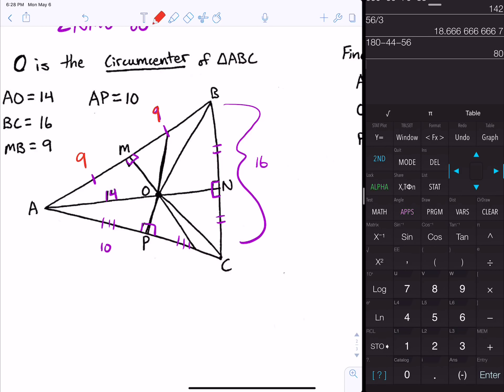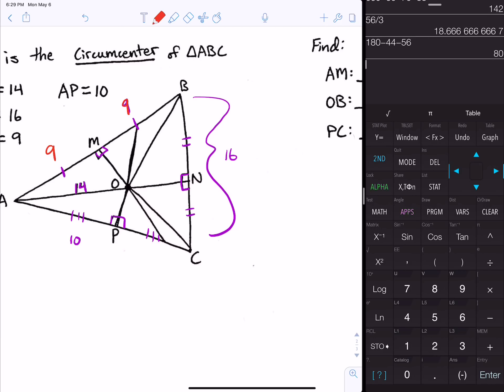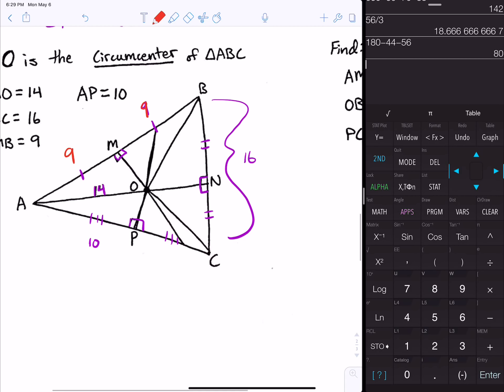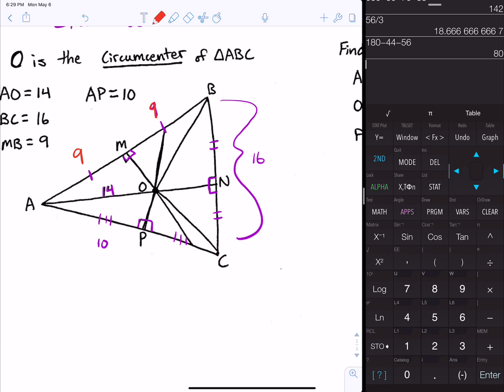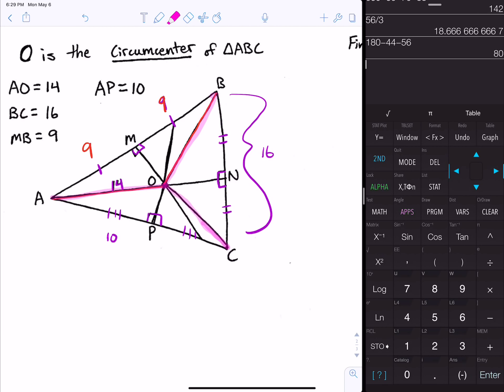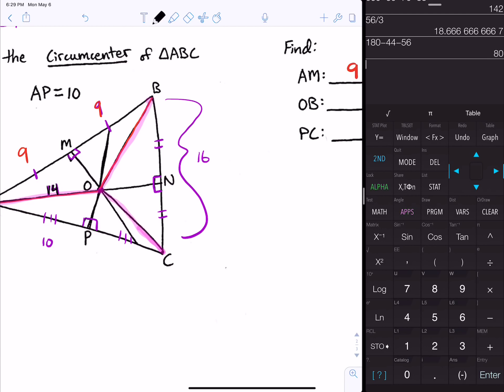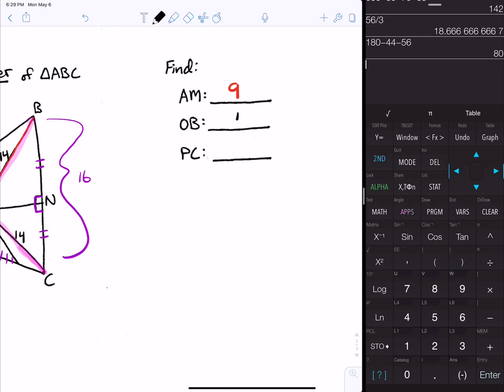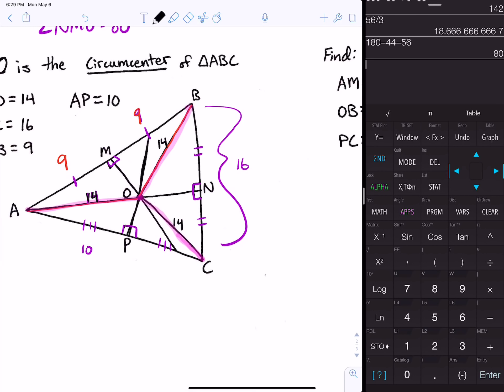OB - we also know with circumcenter that it's equidistant from the vertices. AO, OB, and OC - those three from the circumcenter to the corners or the vertices are all equal. If we know one of them, we know all of them. We do know AO is 14, so therefore OB would also be 14, and OC would also be 14. PC is the last one, and that's pretty simple because that would just also equal 10.